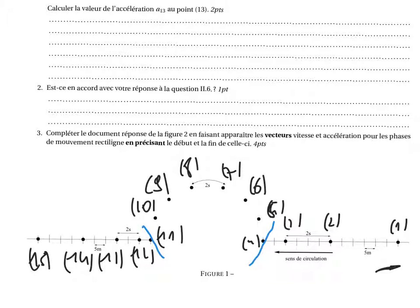On en déduit que de 1 à 4, nous avons donc un mouvement rectiligne. On remarque que la distance entre deux points consécutifs ne cesse de diminuer au cours du temps. C'est donc un mouvement rectiligne et décéléré.